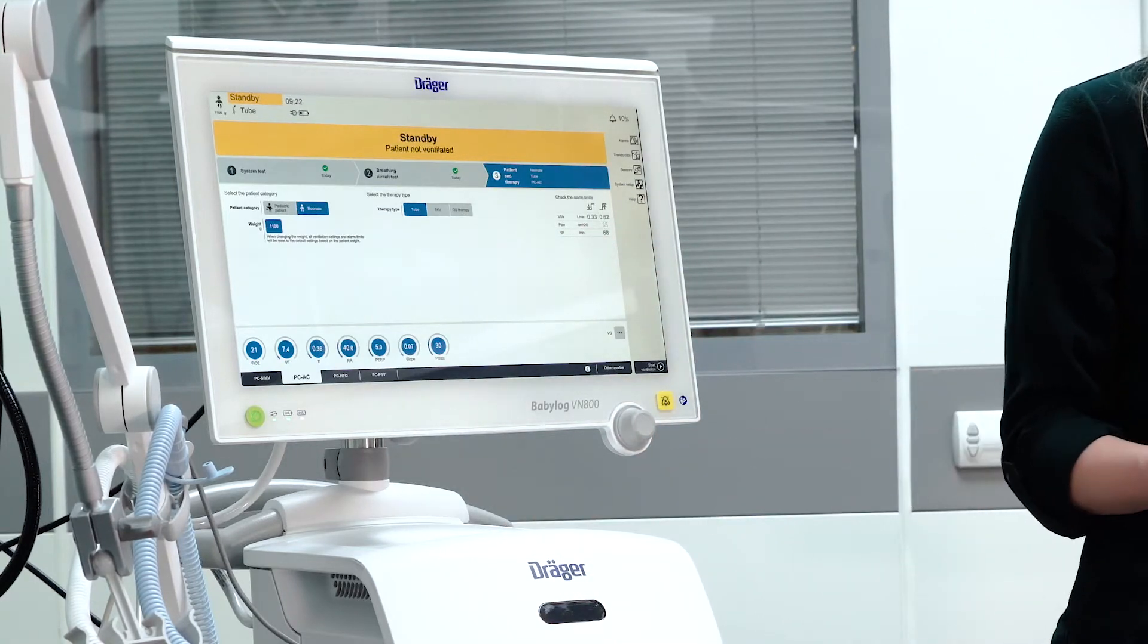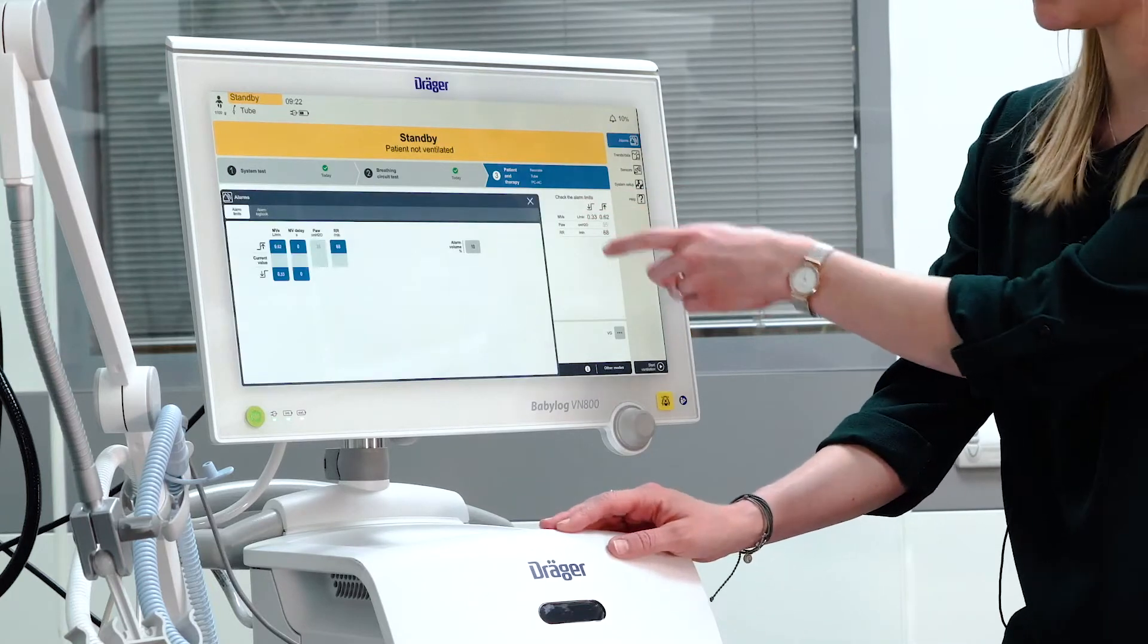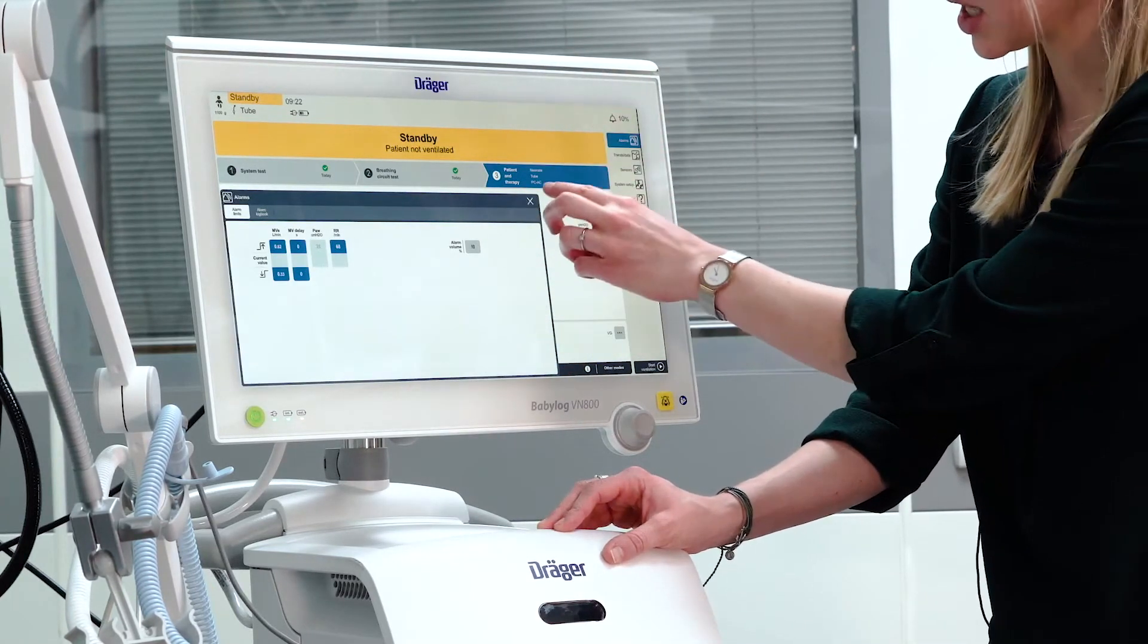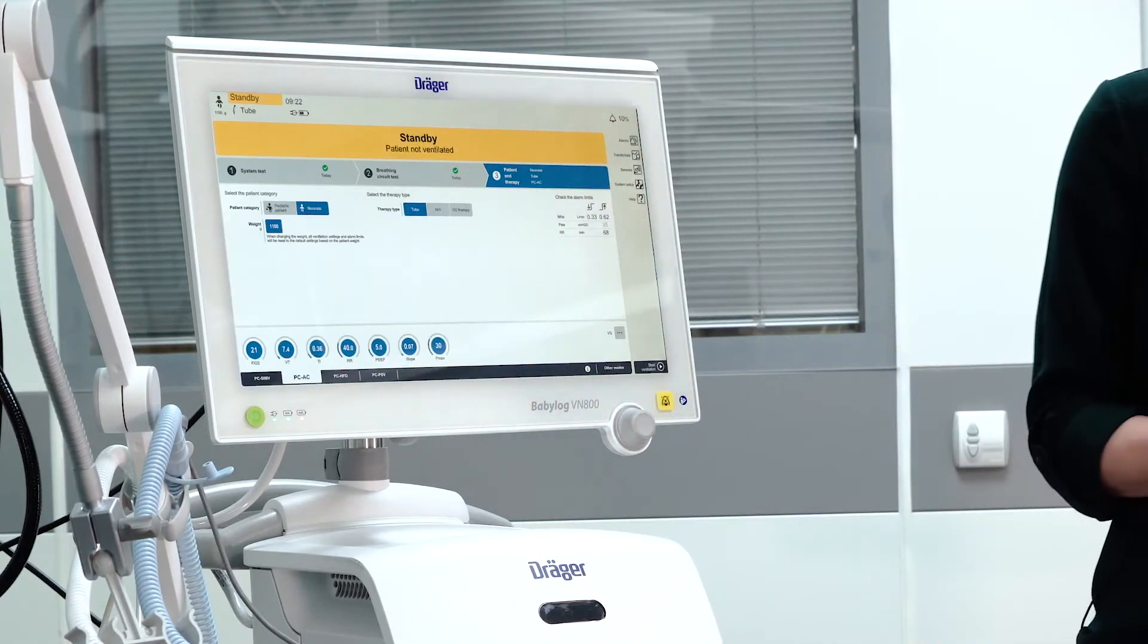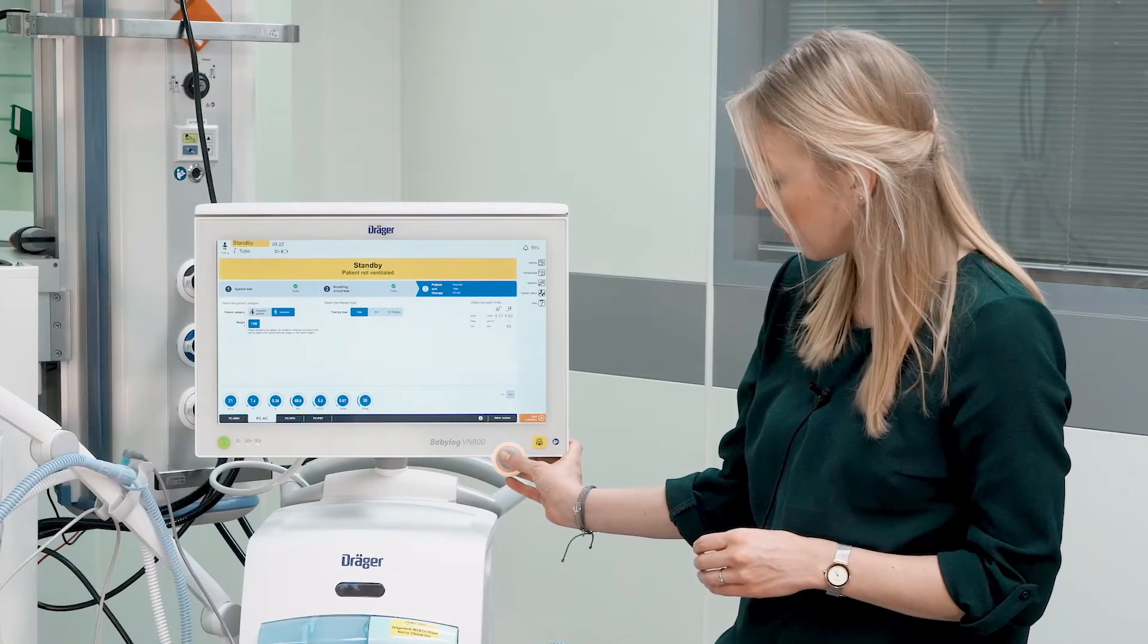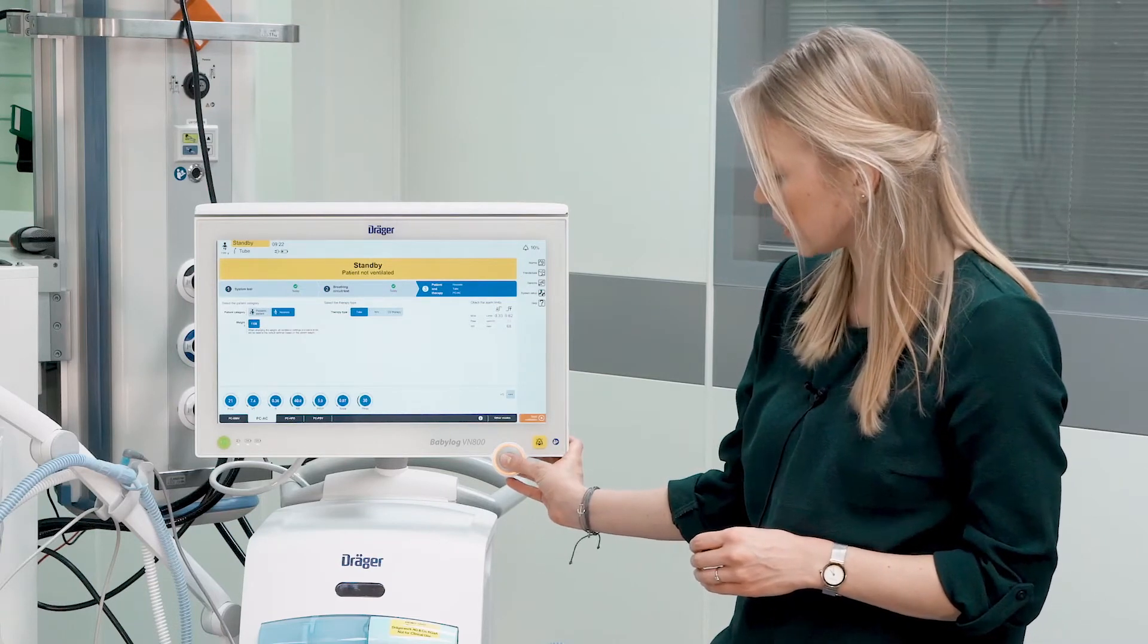Before the start of ventilation therapy, make sure that the alarm limits are set appropriately for your patient. If that is the case, we can start ventilation. Please select start ventilation in the right lower corner and confirm by pressing the rotary knob.